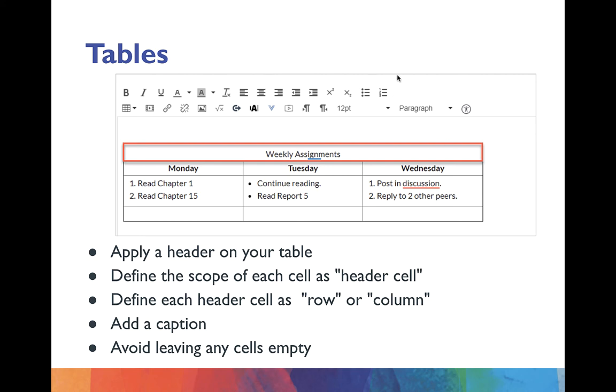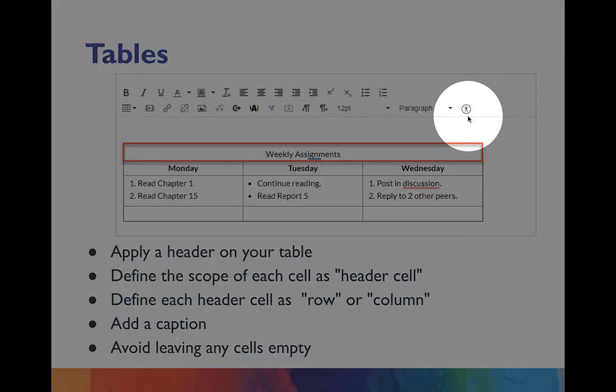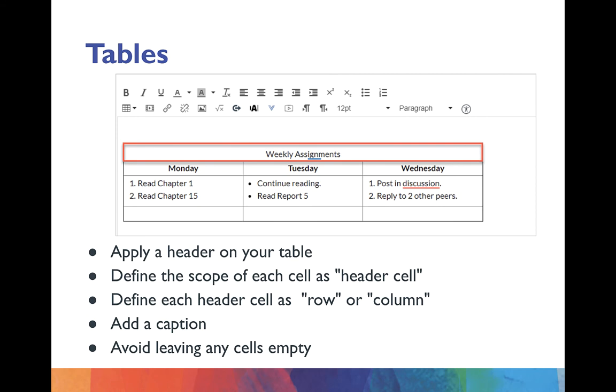Now, this image here is taken from Canvas as a learning management system. And you will see this little icon right here. This icon is the accessibility feature. And if you click on it, it will actually check your page to make sure that everything is accessible, and it will help you to fix things that might not be accessible for students.